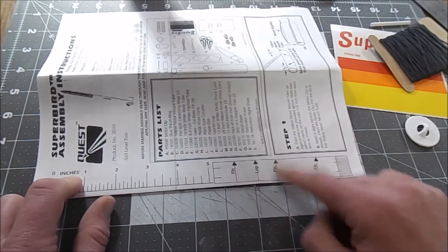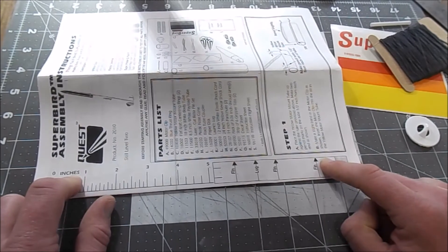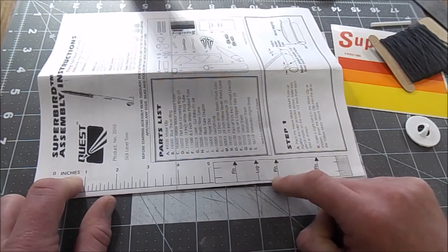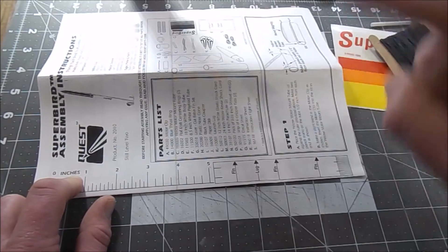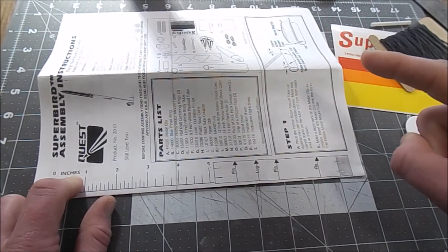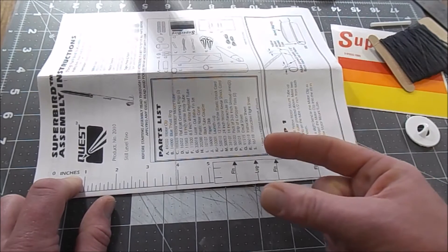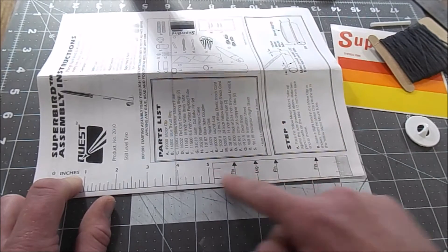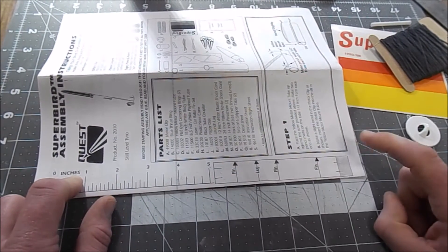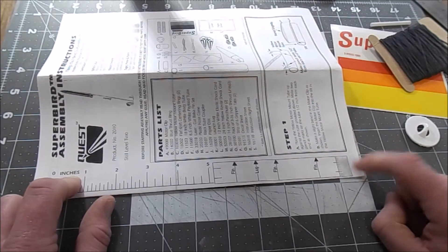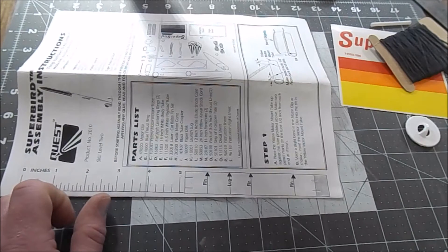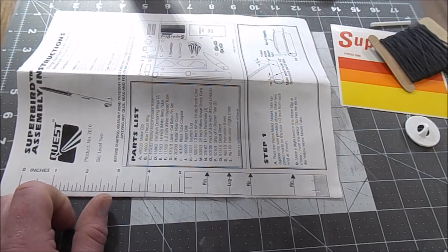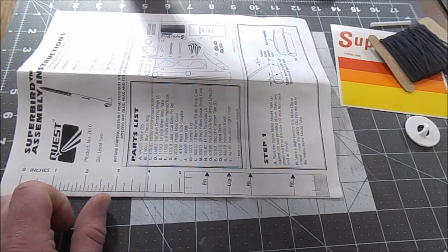You might find that they are slightly too far apart between the first and second and second and third fin, and then the third and first fin are too close together because this might be too large. We're going to check that out and if that's true we will make our own fin marking guide.